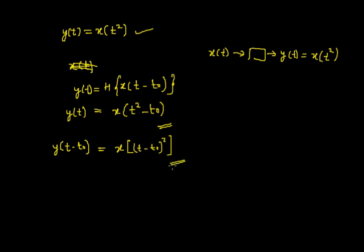By comparing these two, we can say that the expression for the two different outputs are not the same. Hence we can say that the given system is not time invariant, or we also call this as time variant.